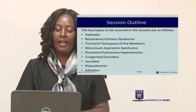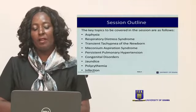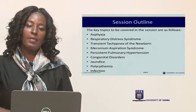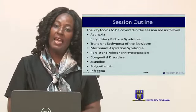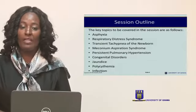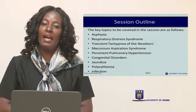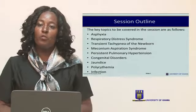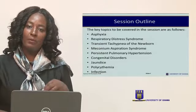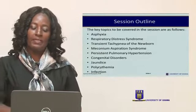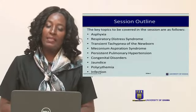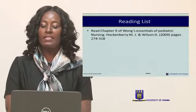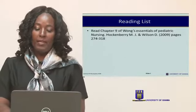This session will look at birth asphyxia, respiratory distress syndrome, and transient tachypnea of the newborn. Meconium aspiration syndrome will also be covered under birth asphyxia. Congenital disorders will be covered next semester in medical-surgical conditions. Jaundice has been mentioned last semester, polycythemia and infection are also common. Chapter 9 of Wong's Essential Pediatrics, uploaded on Sakai, is what you should read.